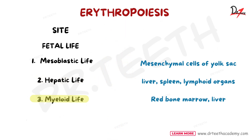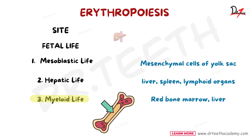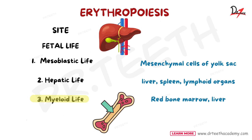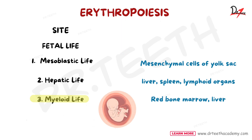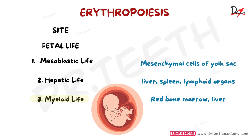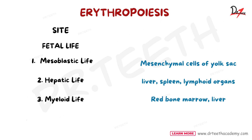Then we have the myeloid stage, that is the third trimester — the last three months of pregnancy. Here the child's RBCs will be produced from the bone marrow and liver. At this stage the process starts resembling that of a living human being to a great extent. So in fetal life, erythropoiesis occurs at different sites in different periods: mesoblastic, hepatic and myeloid.